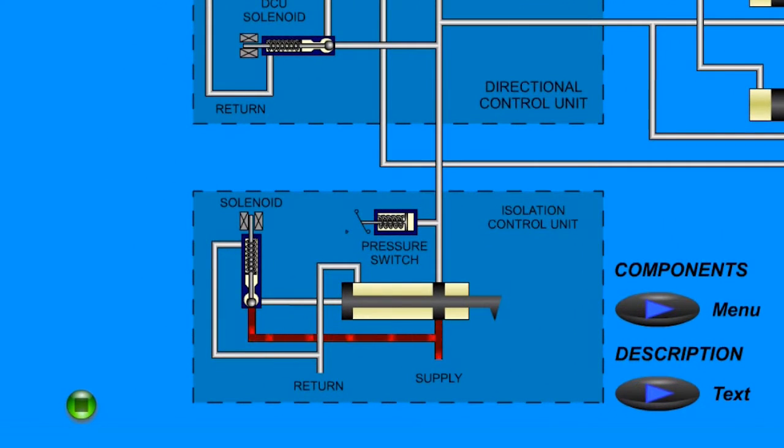With the ICU inhibited, the flow will stop right there. The ICU then sends the hydraulic pressure to the DCU and also the pivot door actuator.